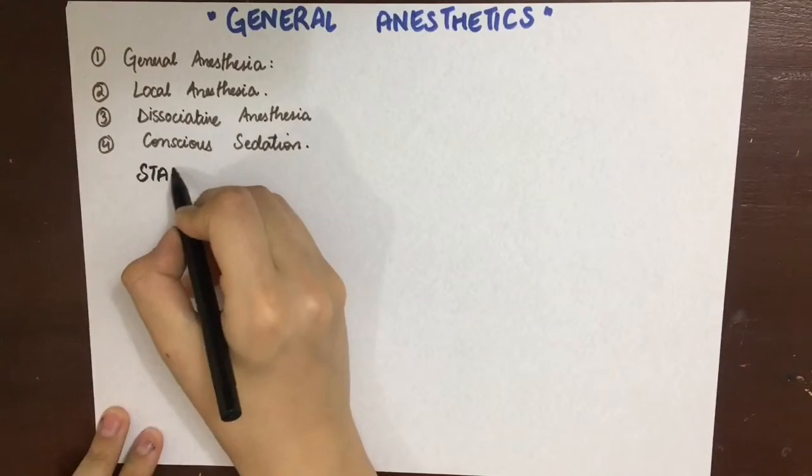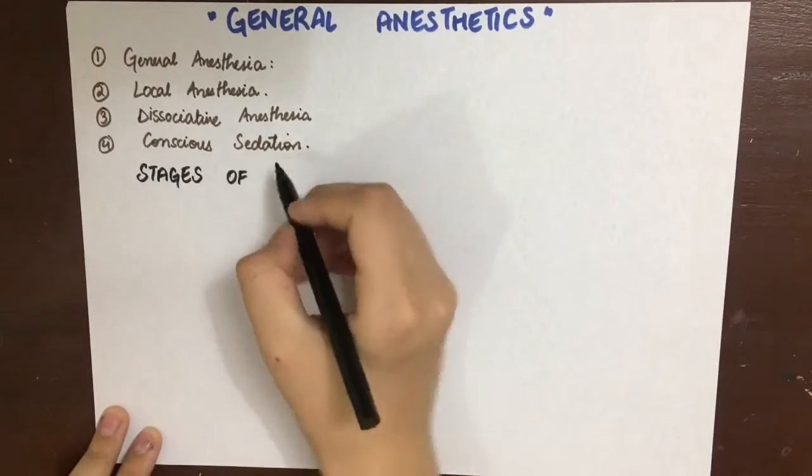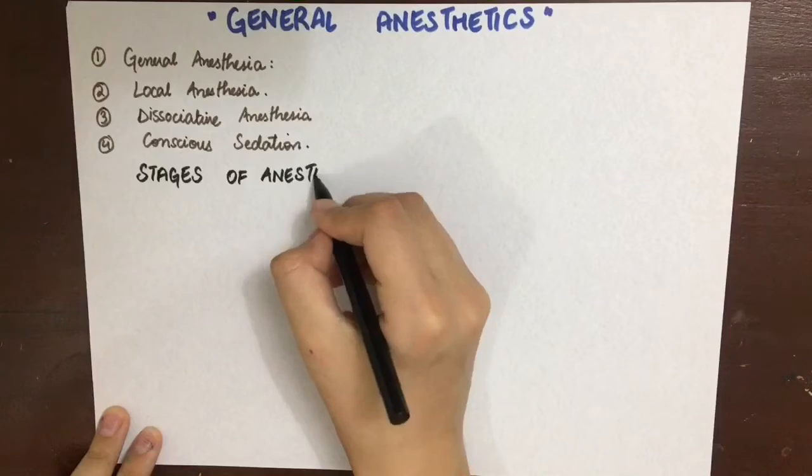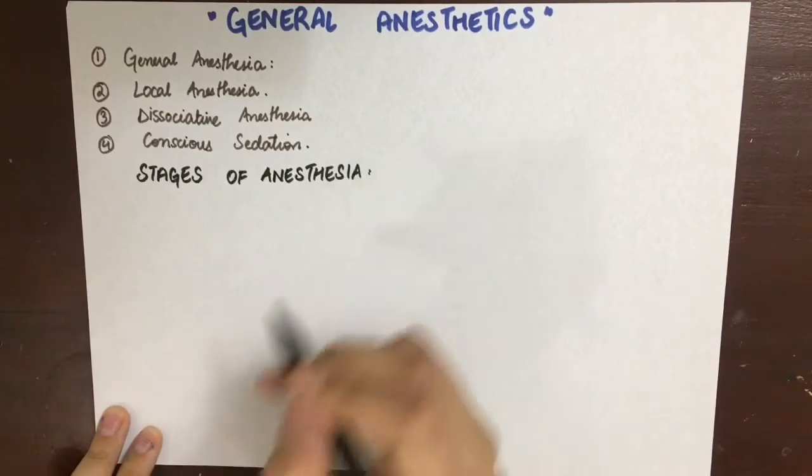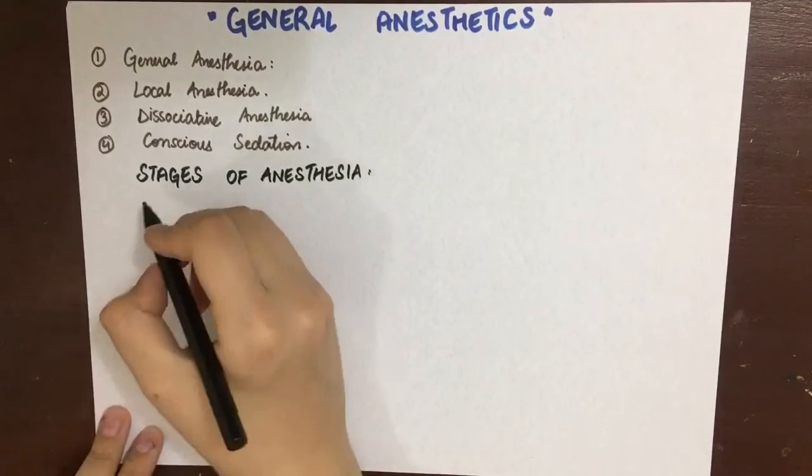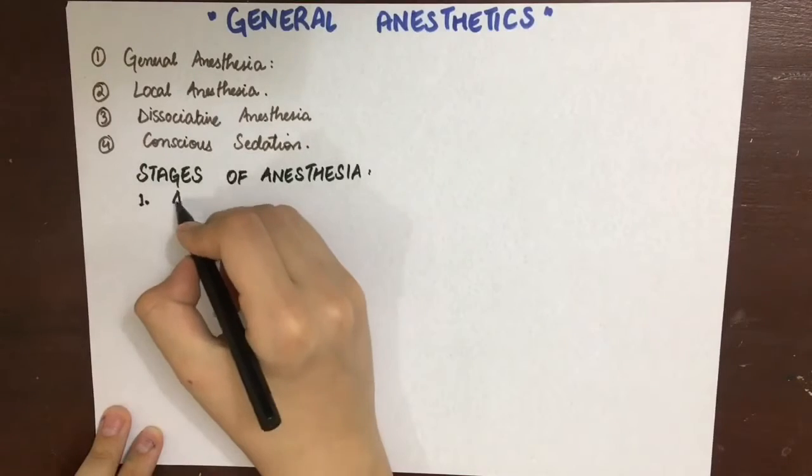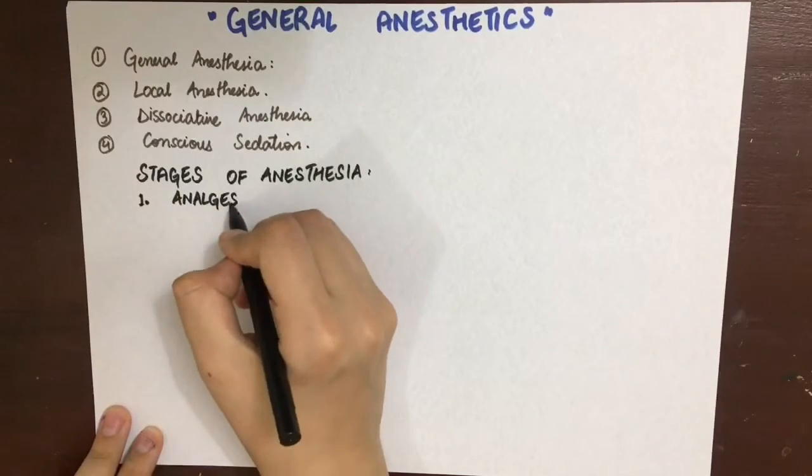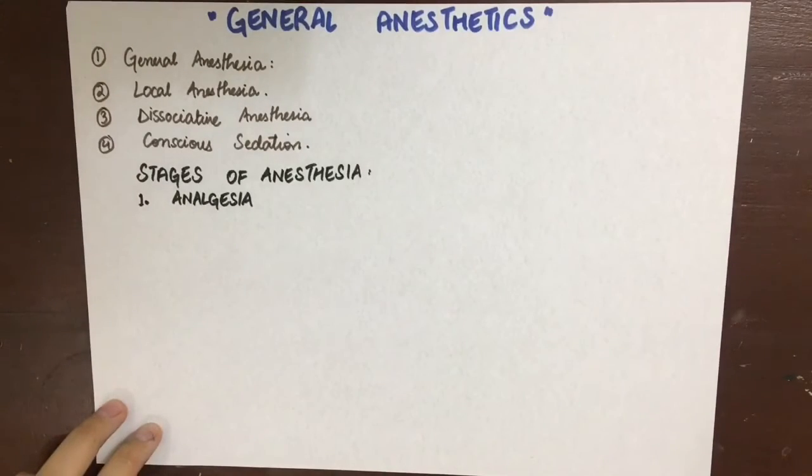Now let's look at the stages of anesthesia. The first stage is the stage of analgesia. In this, consciousness is not completely lost, it is just impaired. The patient feels drowsy and there is decreased awareness of pain. There is amnesia sometimes.